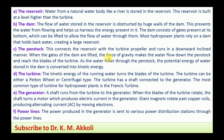The penstock connects the reservoir with the turbine and runs in a downward inclined manner. When the gates of the dam are lifted, the force of gravity makes the water flow down through the penstock and reach the blades of the turbine. As water flows through the penstock, the potential energy of the water stored in the dam is converted into kinetic energy.